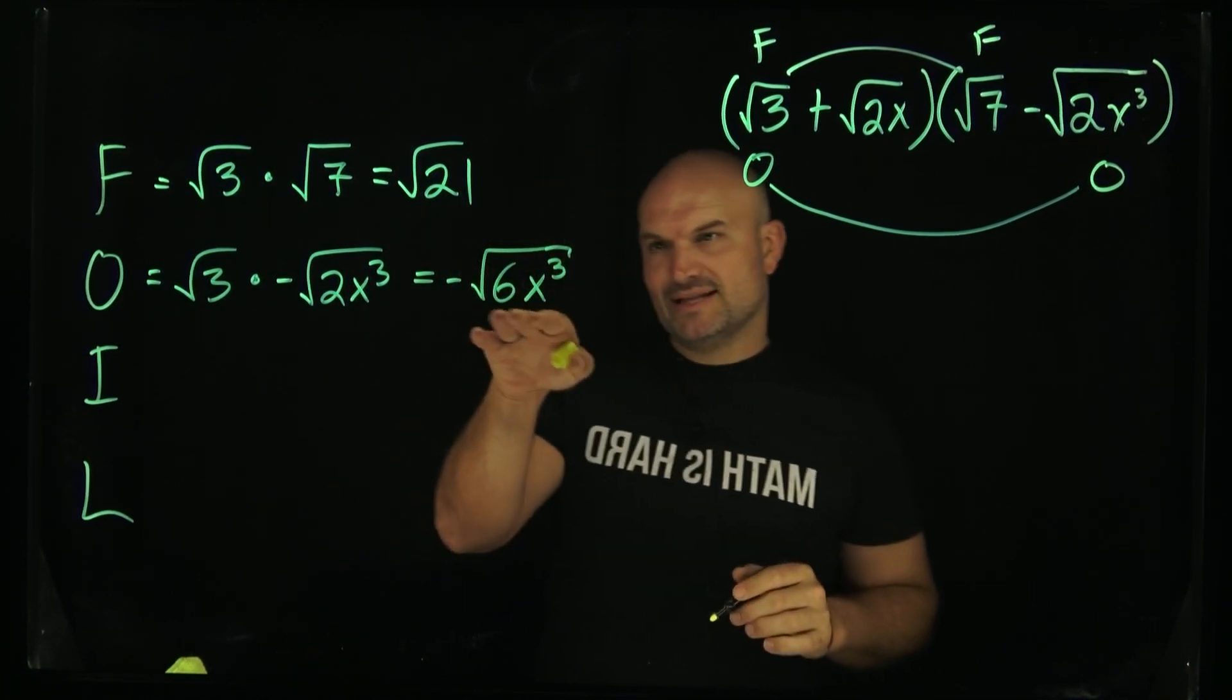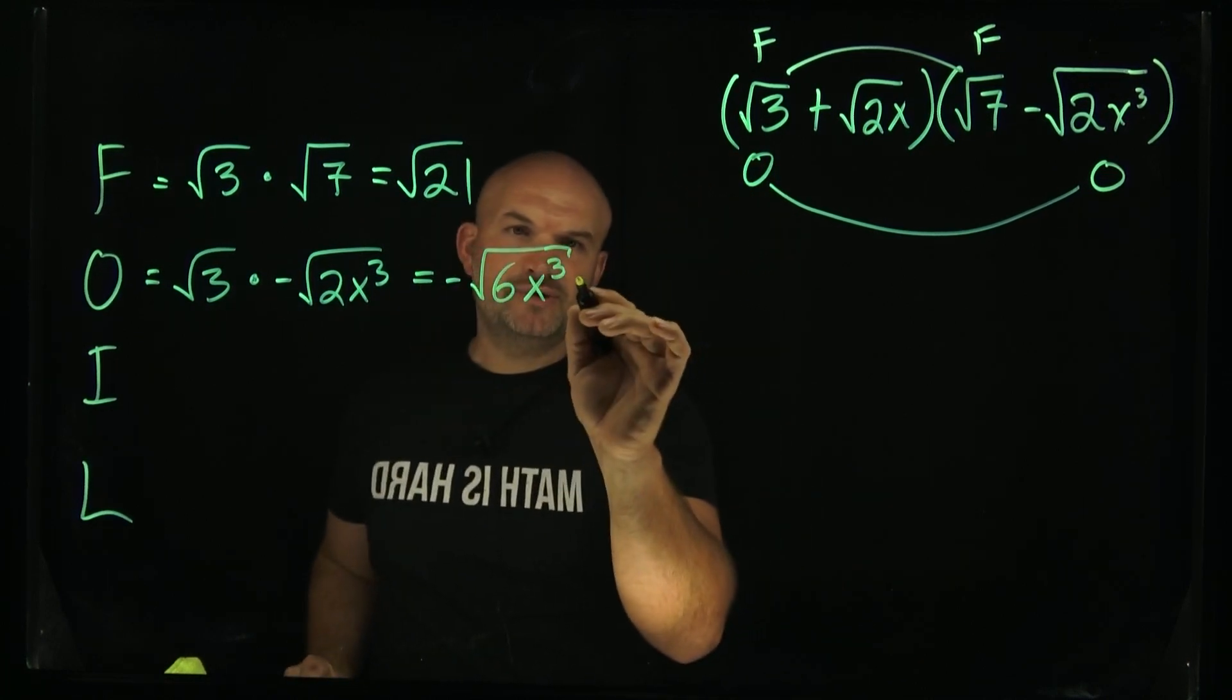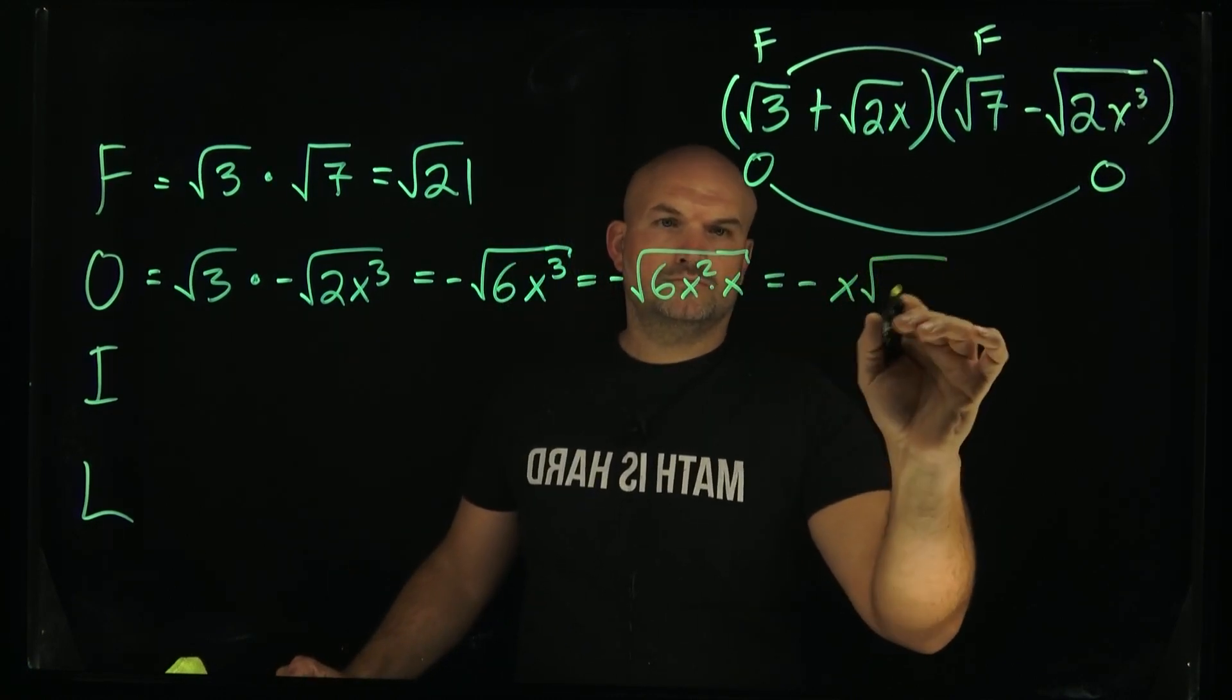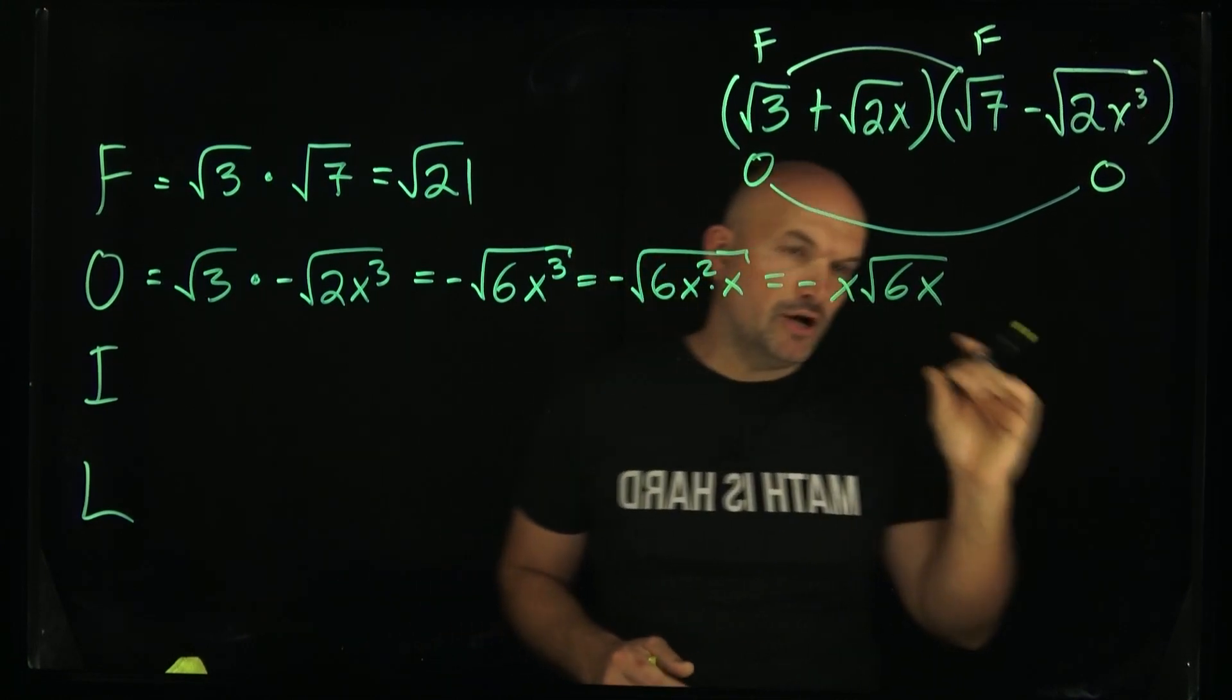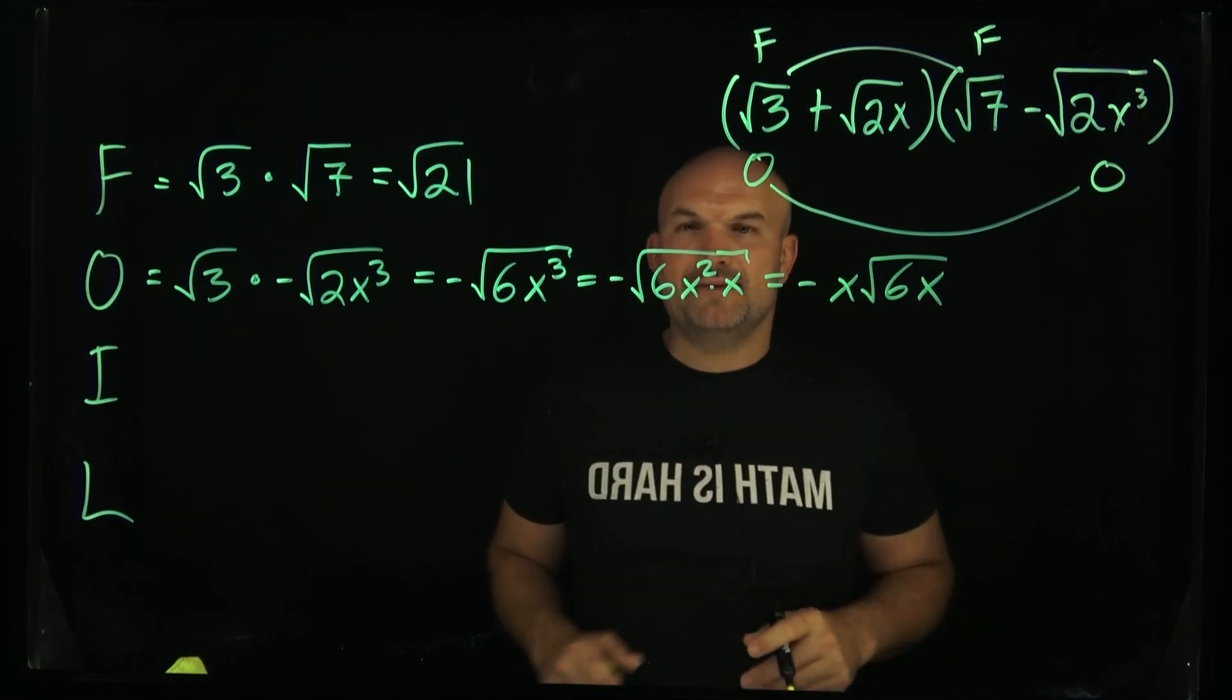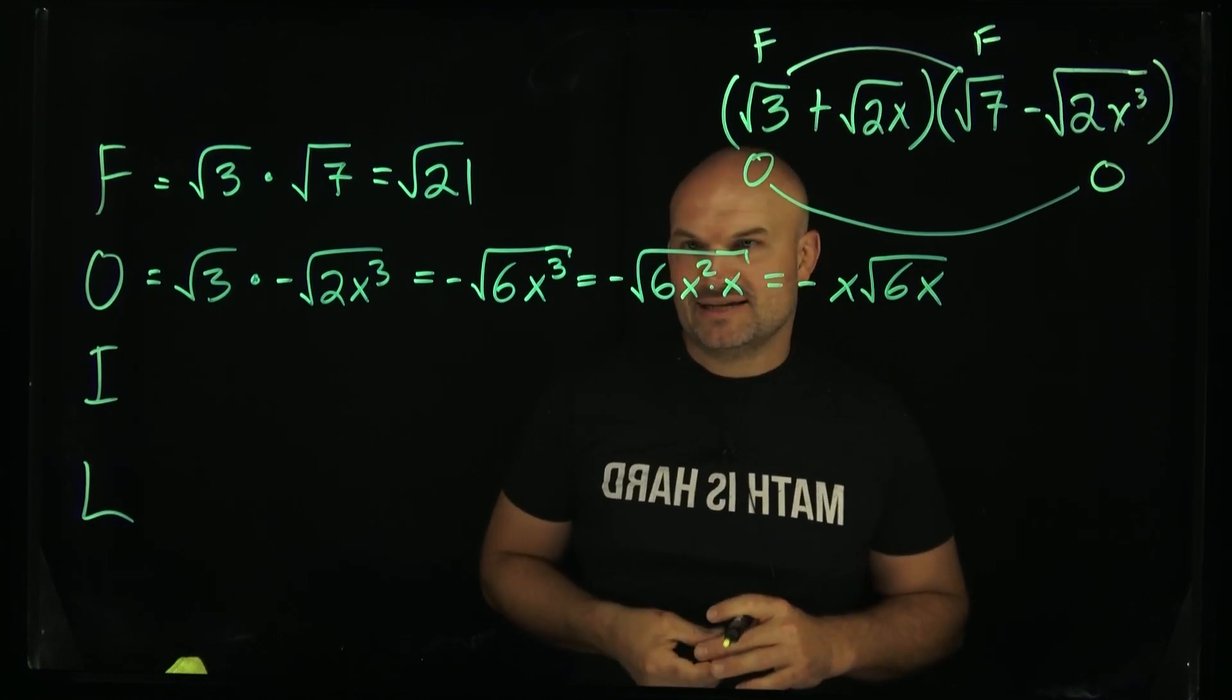The reason I can break that up is I can take the square root of an x squared. To simplify the square root, you can always take the square root of things that are squared. There's no squared numbers that evenly divide into 6, so that's going to remain the same. But x squared, I can take the square root of that, which is just going to leave me with an x.